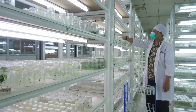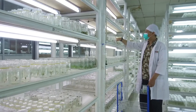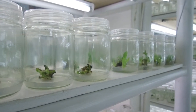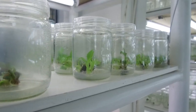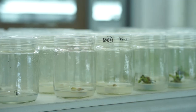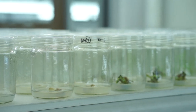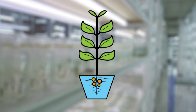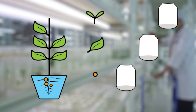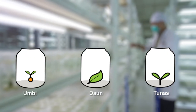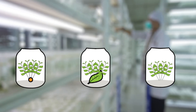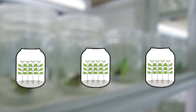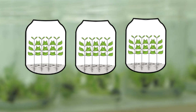Kultur jaringan adalah suatu metode bagaimana kita mengisolasi bagian tertentu dari tanaman, misalnya sel, jaringan, atau organ. Kemudian kita budidayakan secara terkendali atau biasa disebut secara in vitro, dan yang terpenting adalah dalam kondisi yang aseptik. Contohnya, kita ambil bagian daun dari jenis tanaman tertentu yang unggul. Dari daun tersebut kita bisa tumbuhkan batang, tunas, dan akar, sehingga bisa membentuk tanaman yang lengkap.